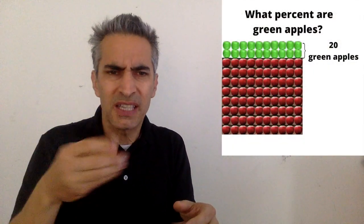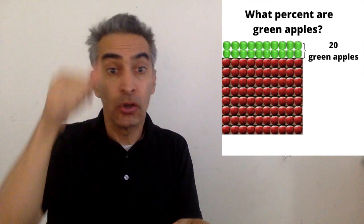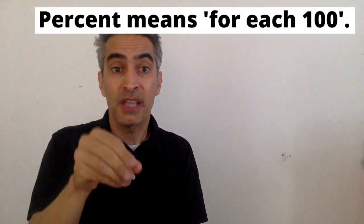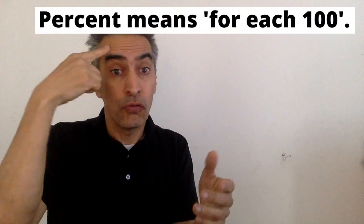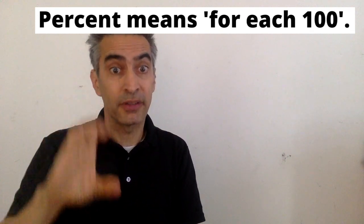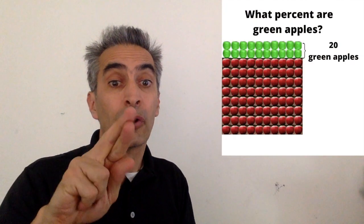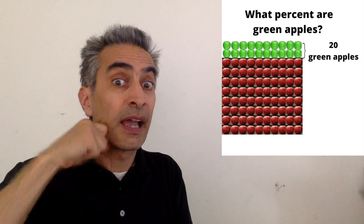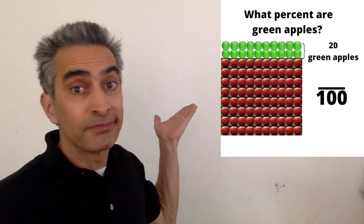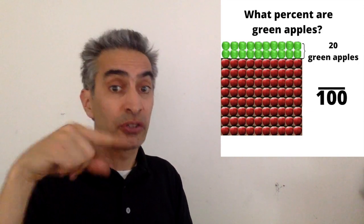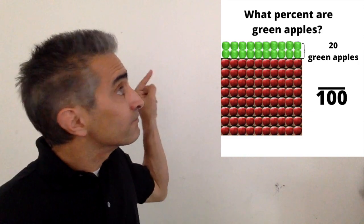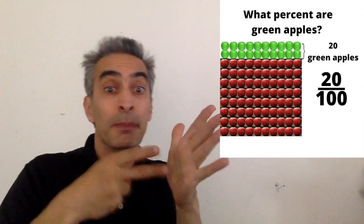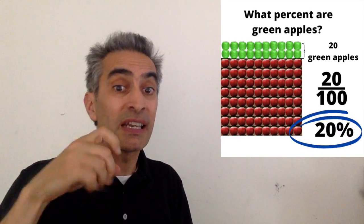What percent of the apples are green? Remember, percent means for each 100. Maria has exactly 100 apples. She counts twenty green apples. That means twenty percent of the apples are green.